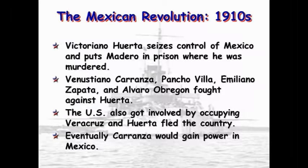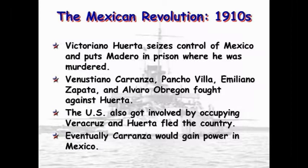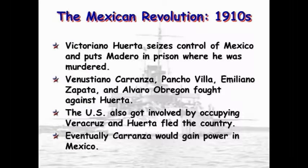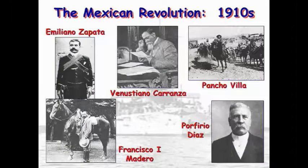Huerta wanted to be a dictator. The U.S. also got involved by occupying Veracruz, and Huerta fled the country. Eventually, Carranza would gain power in Mexico. Pancho Villa actually turned against the United States, and in 1914 he massacred a bunch of people in Columbus, New Mexico, and the United States went after him — we never did catch him. It kind of kept us occupied and gave our troops a little training before World War I. But Mexico has always been a nation of revolution and civil war, and we had to deal with that because it was really close to our back door.